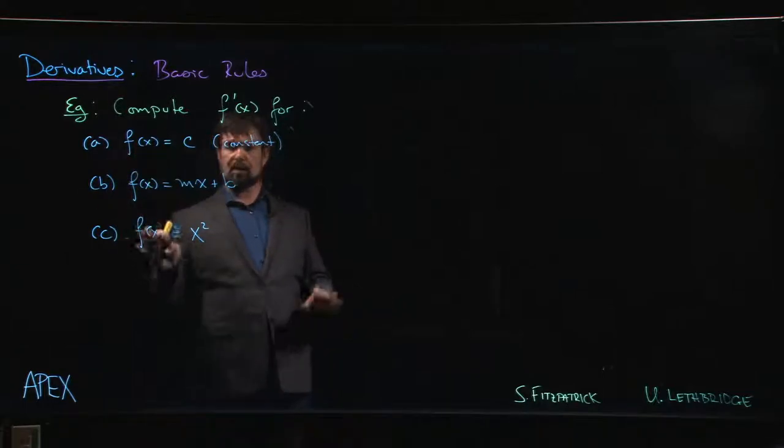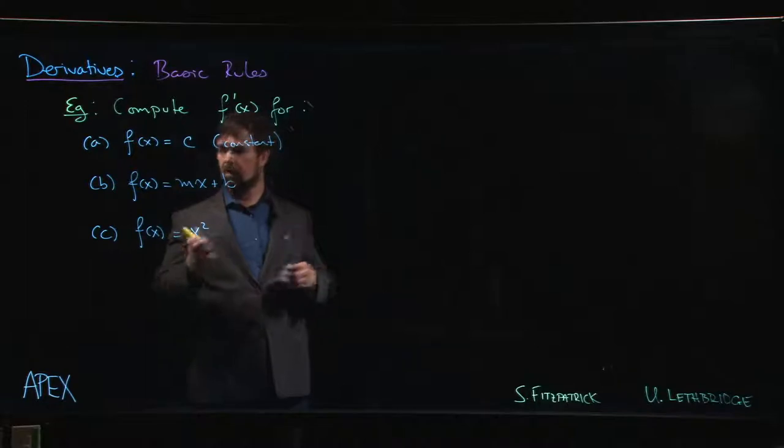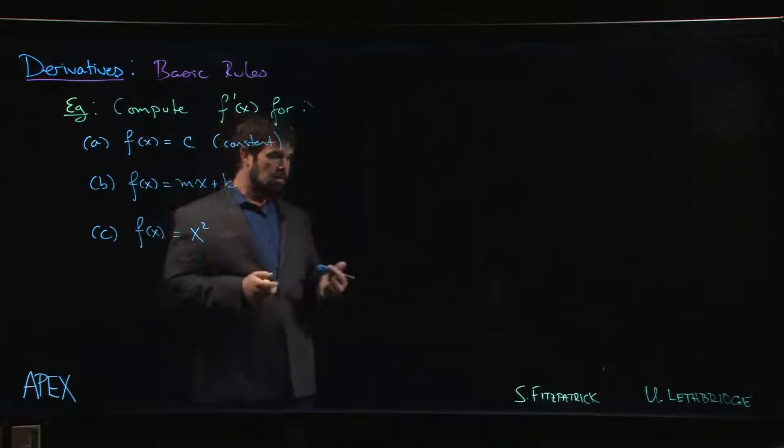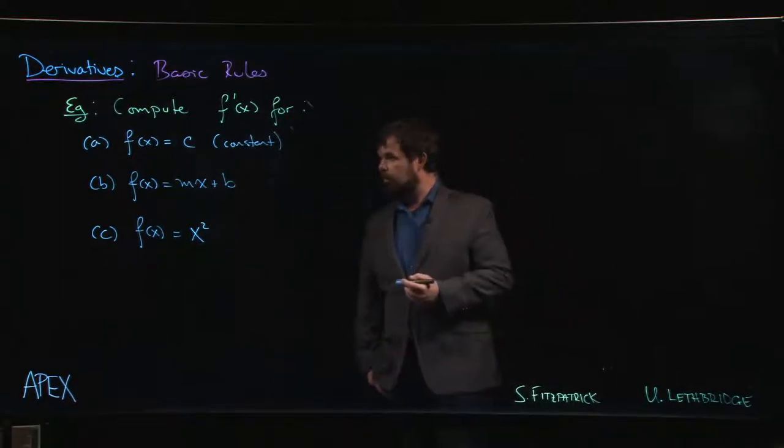I've started with three very simple examples here to get us started, and then we'll work our way up through some more complicated examples. We've already seen a few, but we'll start with these. Now, a constant function—here we probably already know the answer without doing any work. In fact, for parts a and b we know the answer.